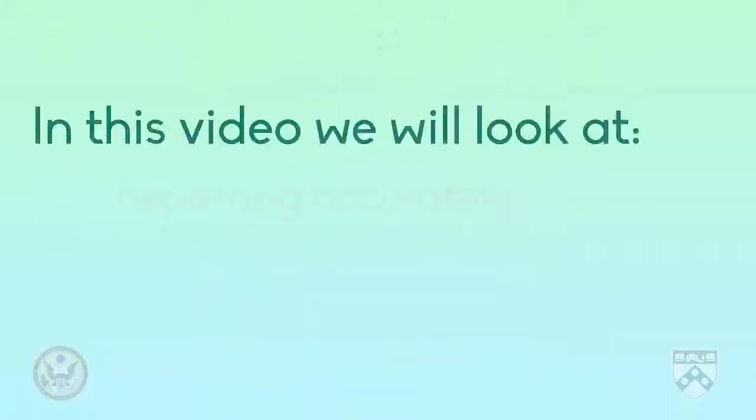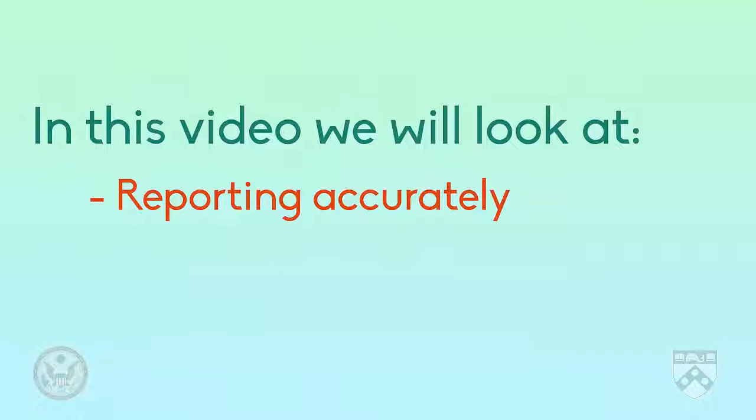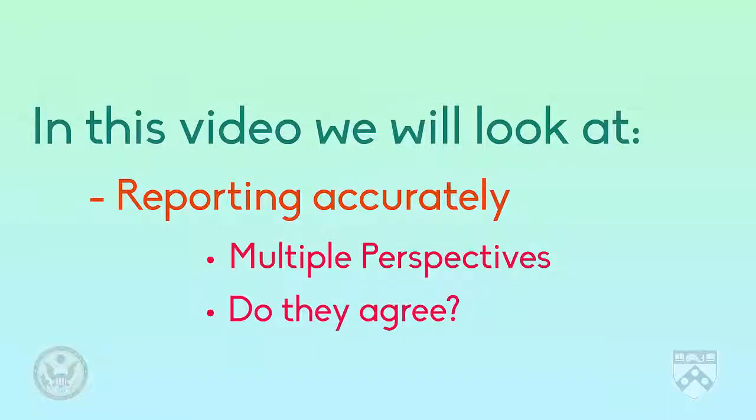In this video, we looked at reporting a story accurately. We learned that the more perspectives a journalist can get, the more different types of sources they can interview, the better. If they can find one source who confirms the story of another, they are more likely to find out, and therefore write, the truth.